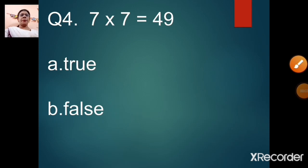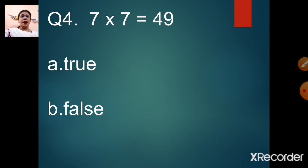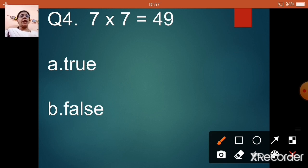Question number 4: 7 sevens are 49. Option A: true. Option B: false. Let us say the table of 7 and check — 7 ones are 7, 7 twos are 14, 7 threes are 21, 7 fours are 28, 7 fives are 35, 7 sixes are 42, 7 sevens are 49. That means our answer is correct — option A, true.